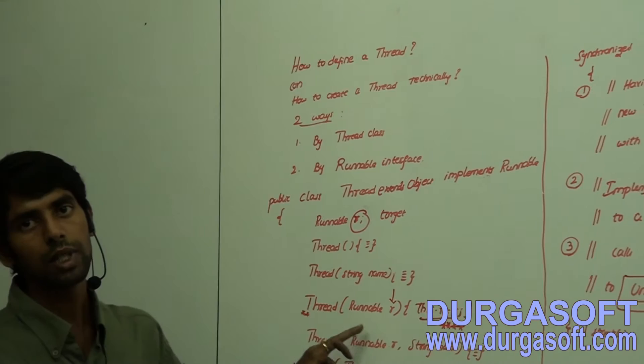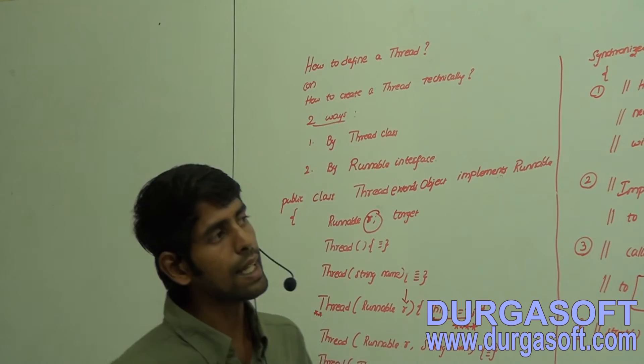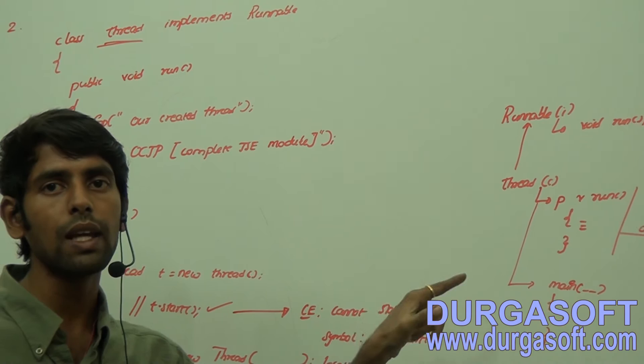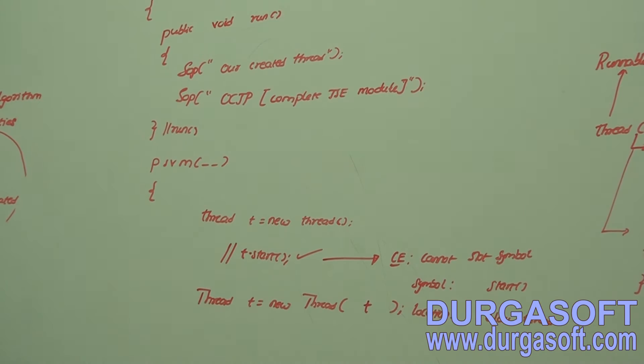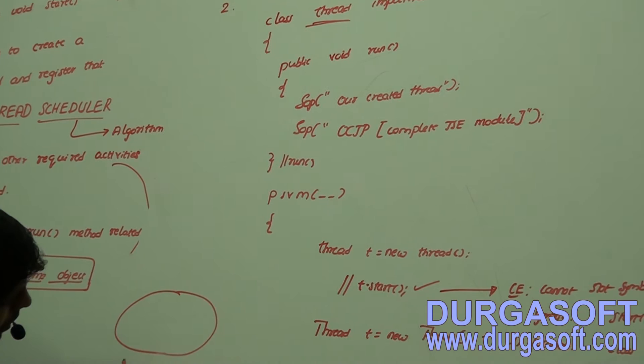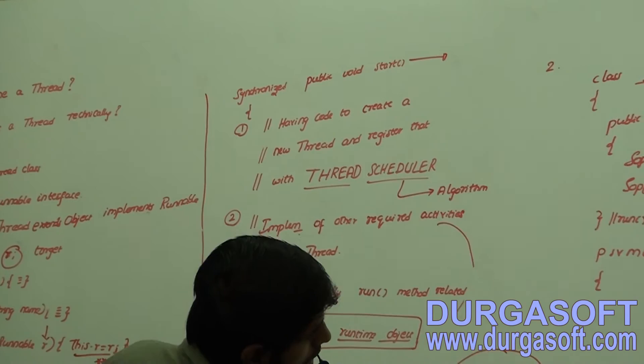The type of this constructor argument is Runnable. So I can pass all Runnable types. Thread is also one of the types for Runnable since it is the parent, so a child can also be treated as a type of Runnable - that is valid in Java. Because of this particular statement, an object is created. The private members, since they are private, will not get inherited at runtime.